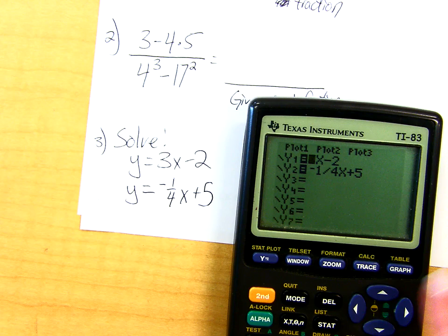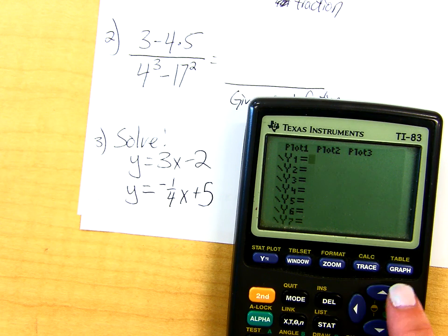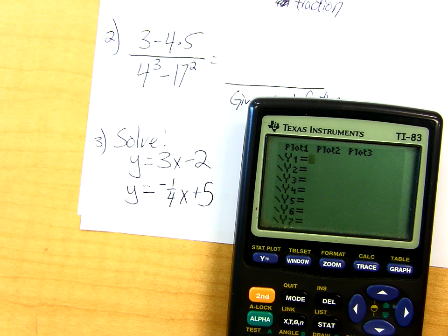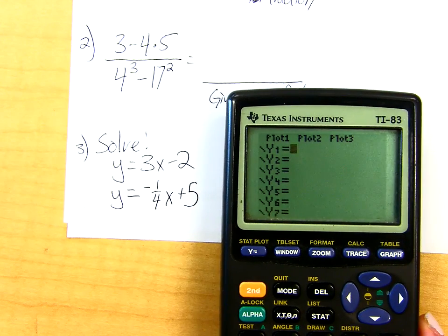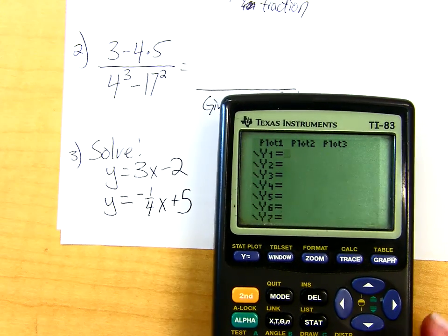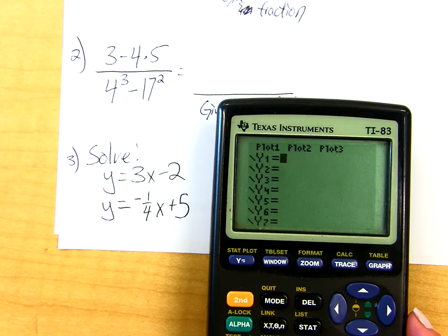So I'm going to hit the Y equals button. Now you probably have some old stuff from yesterday. You can clear out the old stuff. Make sure plot 1, 2, and 3 along the top are not darkened. So your screen should look exactly like my screen.